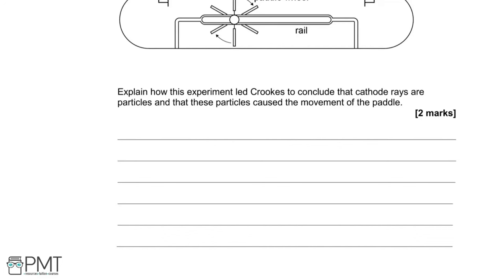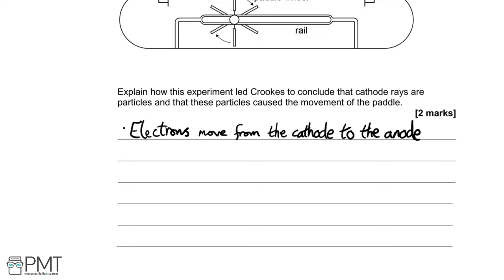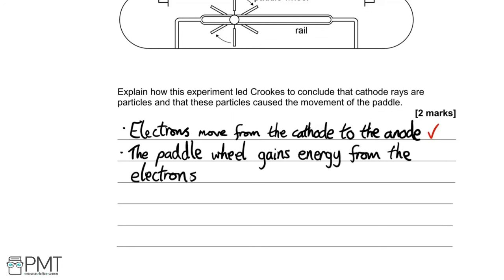For this to work we need those cathode rays to contain matter particles which can impart momentum onto that wheel. The first mark comes from stating that the electrons move towards the anode from the cathode. The second mark is for saying that the wheel gains energy — or momentum or impulse — from those electrons. So two marks there.